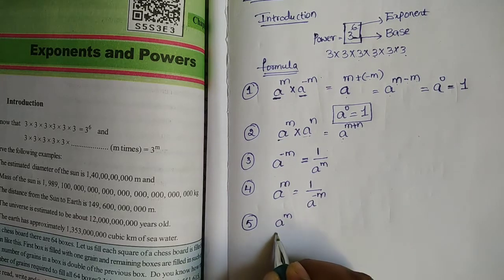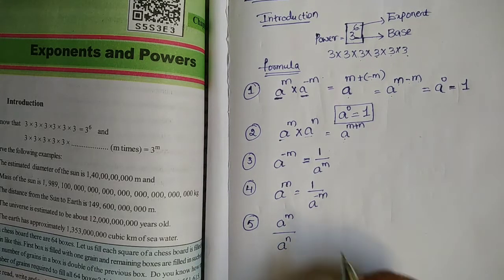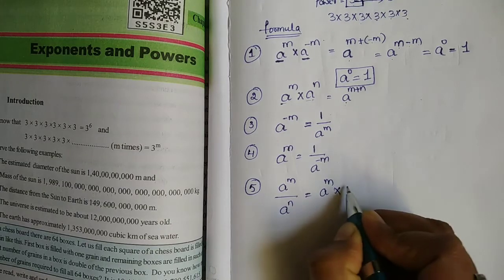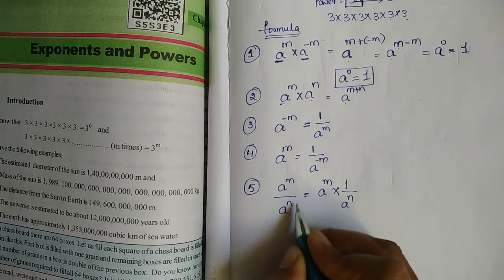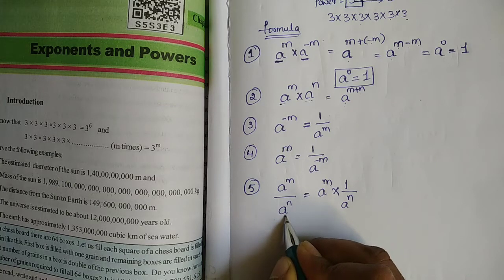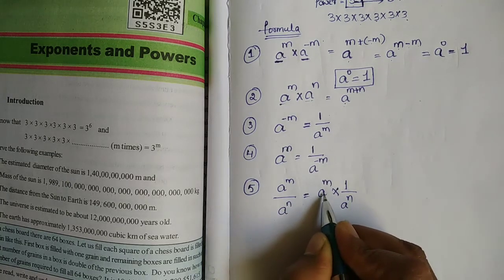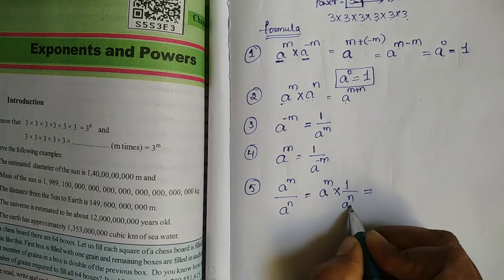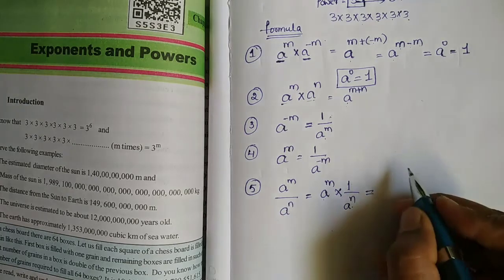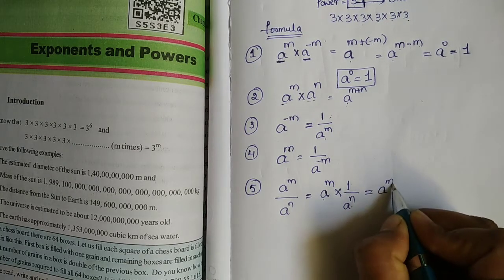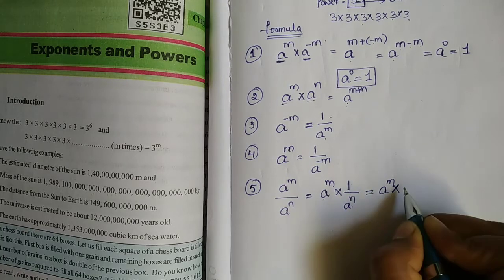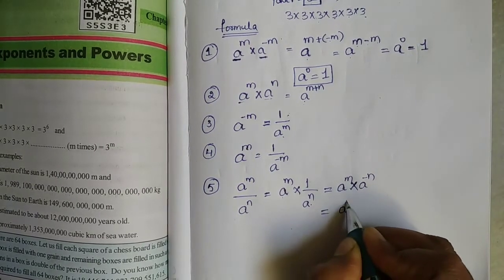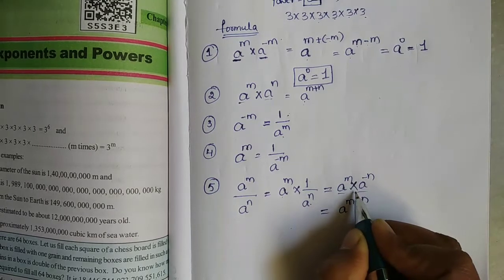The fifth formula: a to the power of m divided by a to the power of n equals a to the power of m into 1 by a to the power of n, which equals a to the power of m minus n.